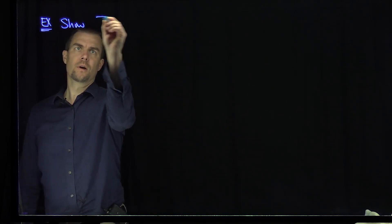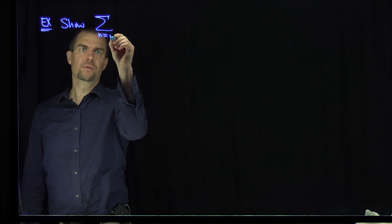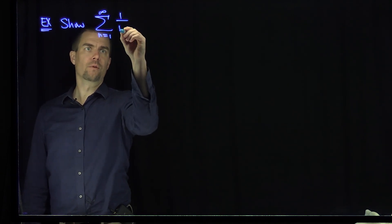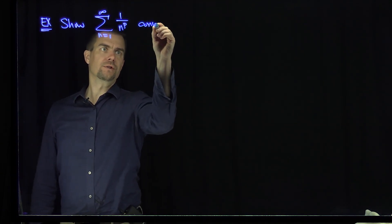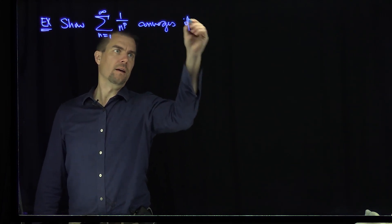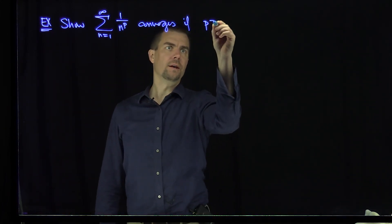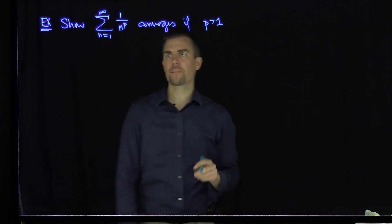Let's show that the sum n goes from 1 to infinity of 1 over n to the p converges if and only if p is bigger than 1.